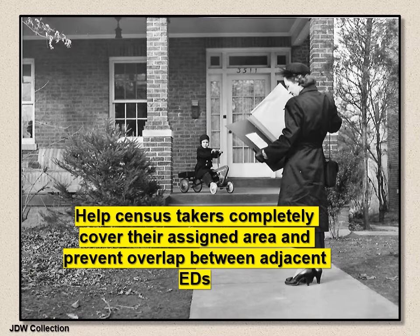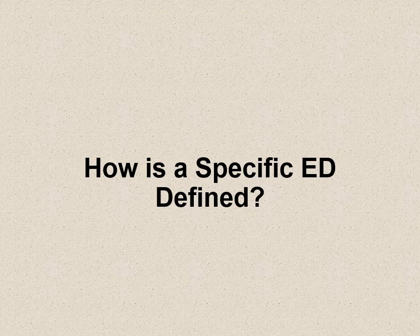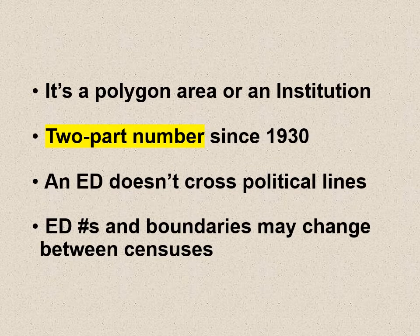Here is a press photograph — this is not a real census taker, it's a model — and she's looking at her portfolio, assumed to be a map showing her responsibility. If she was in a rural area, there might even be an aerial photograph there. EDs are set up to help census takers completely cover their assigned area, so they can see exactly where the boundaries are, and prevent overlap between adjacent enumeration districts so you don't get a person being double counted on the census.